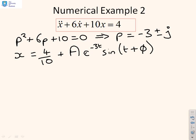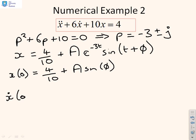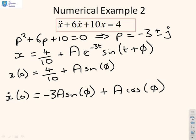Next, I'm going to substitute in initial condition. So x(0) is going to give me 4/10 + A sin φ. So that's my first initial condition. Second initial condition, I've got ẋ(0). So what I'll get here is -3A sin φ + A cos φ.